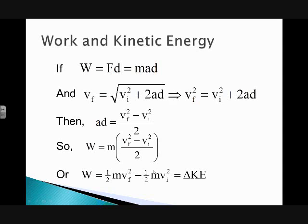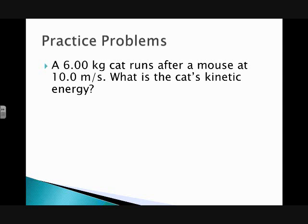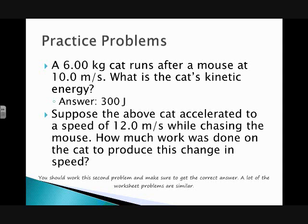Here's a little practice problem. I'm not going to go through it here. I'm going to set it up and then just give you the answer. You can work on it. A six-kilogram cat—big cat—runs after a mouse at 10 meters per second. Big, fast cat. What's the cat's kinetic energy? You work on that, you get 300 joules.